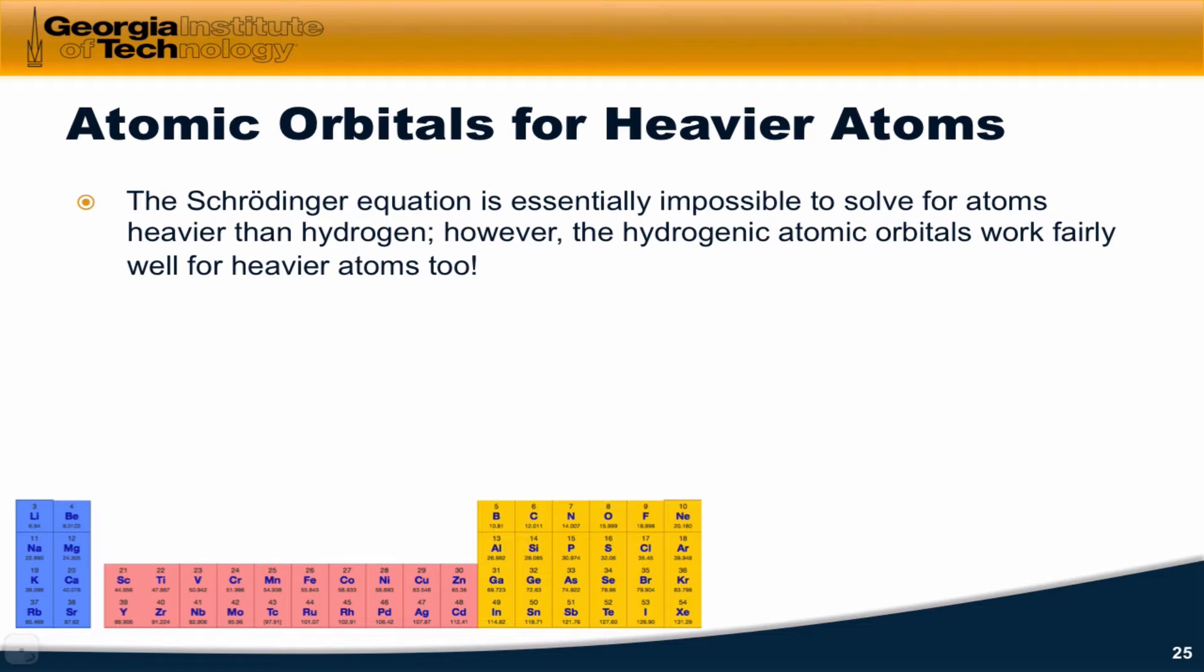Well, the Schrödinger equation is hard for the hydrogen atom, as you'll discover in later courses, but it's essentially impossible to solve for atoms heavier than hydrogen. However, the blessing here is that the hydrogenic atomic orbitals actually work fairly well for the heavier atoms too.